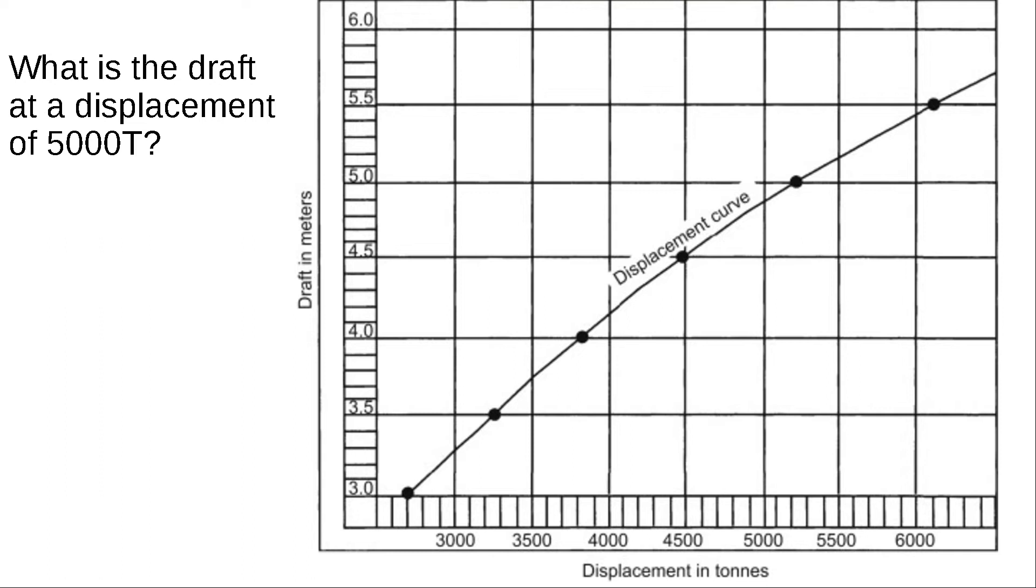To do this, we look inside our table. The bottom axis talks about displacement, so go to 5,000 tons on there. Make yourself a line. These lines are exaggerated in thickness just to allow for illustrative purposes in the video.